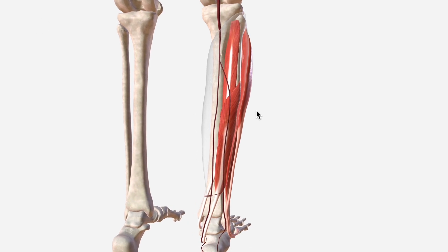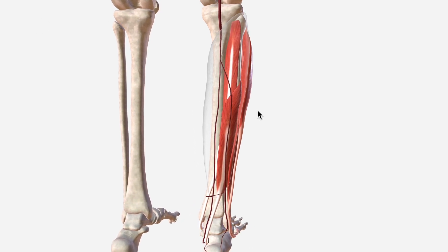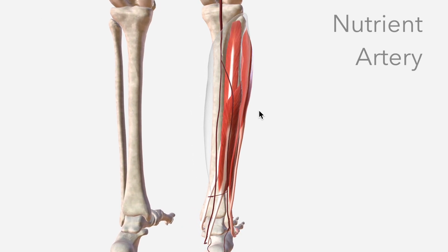The next branch we'll talk about is the nutrient artery, which departs the fibular artery around here to pierce the middle third of the fibular bone, supplying the tissue of the bone.